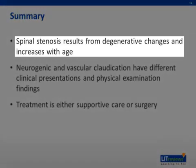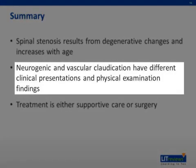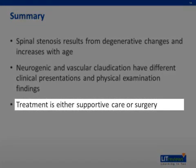Summary. Spinal stenosis can result from any process that causes narrowing of the spinal canal, but is usually due to degenerative changes, and thus is more prevalent in older populations. It is important to recognize the similarities and differences in how neurogenic and vascular claudication present, as the treatments of the two are dramatically different. Finally, the vast majority of treatment is aimed at providing analgesia, but ultimately some people will require surgery to relieve the mechanical cause of the spinal narrowing.